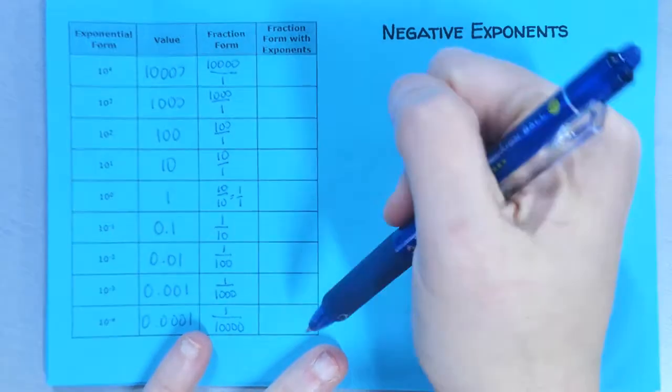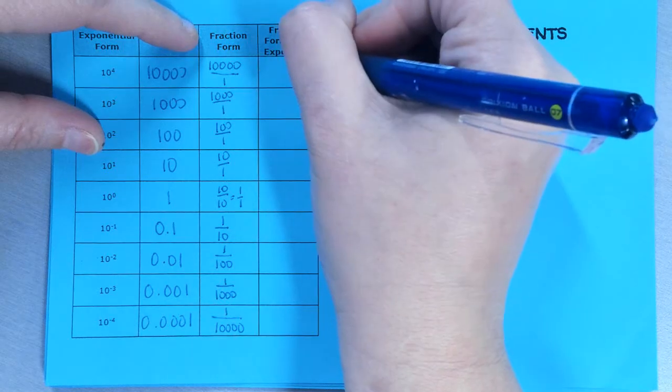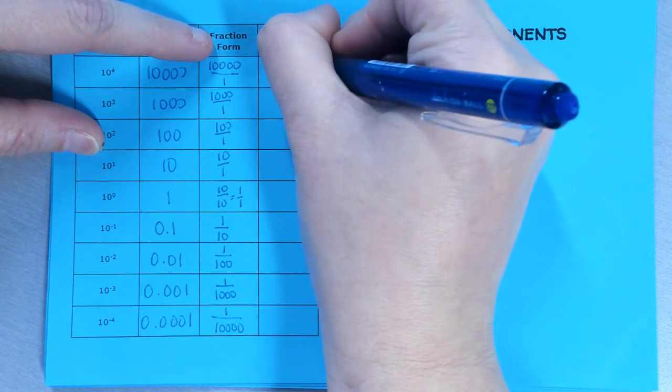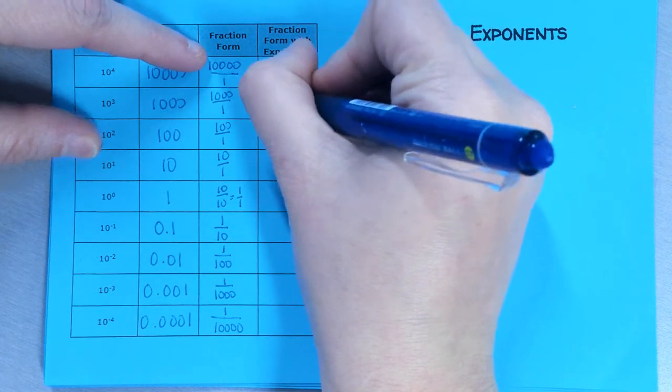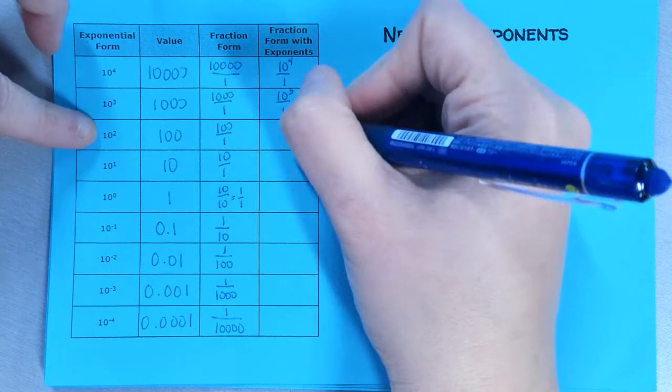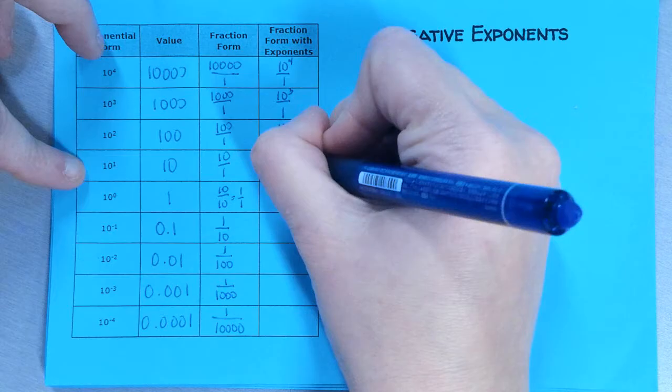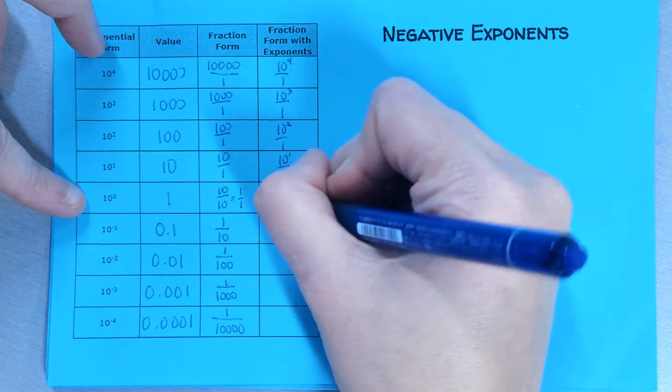So now let's rewrite this in fraction form with our exponents. 10 to the fourth is just 10 to the fourth over 1. 10 to the fourth over 1. This is 10 to the third over 1, and I'm just using what I had here. This is going to be 100 over 1 is 10 squared over 1. 10 over 1 is 10 to the first over 1.